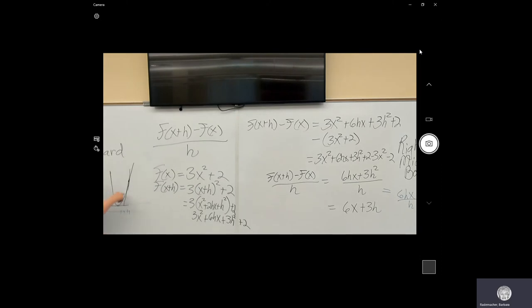So here's a very rough graph of what 3x squared plus 2 would look like, and here's a line, a very badly drawn line, tangent to it.